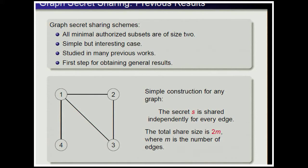Every graph admits a very simple construction: given a graph, we share the secret independently for every edge. For example, for a graph with four edges, for the edge {1, 4}, we pick a random number and send it to participant 1, then send to participant 4 the secret plus the random number, and do the same for every edge. This gives a scheme realizing the graph with total share size two times the number of edges.